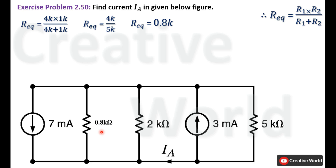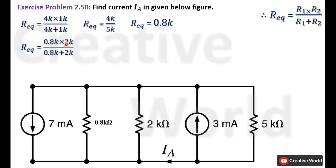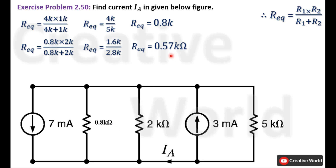Now inside this circuit there are three resistances connected in parallel. We will further simplify this network by finding the equivalent resistance of 0.8kΩ and 2kΩ, assuming 0.8k is R1 and 2k is R2. Product of 0.8k and 2k is 1.6k, and their sum is 2.8k. Dividing 1.6k by 2.8k gives 0.57k. So we replace these two parallel resistances with a single resistance of 0.57kΩ.